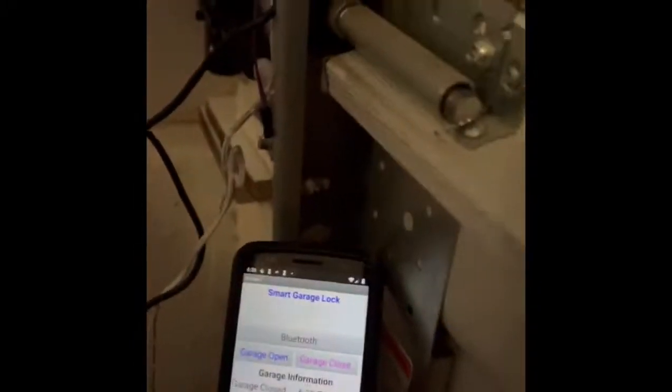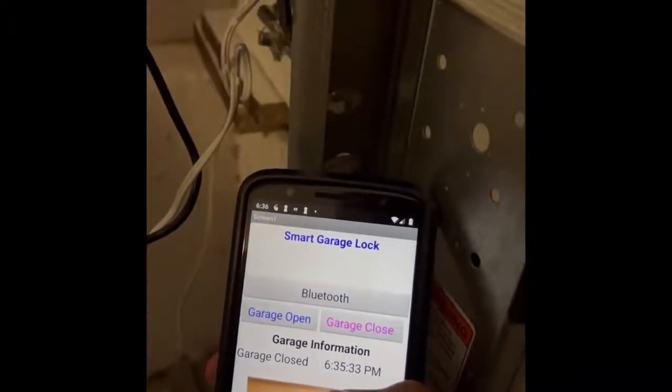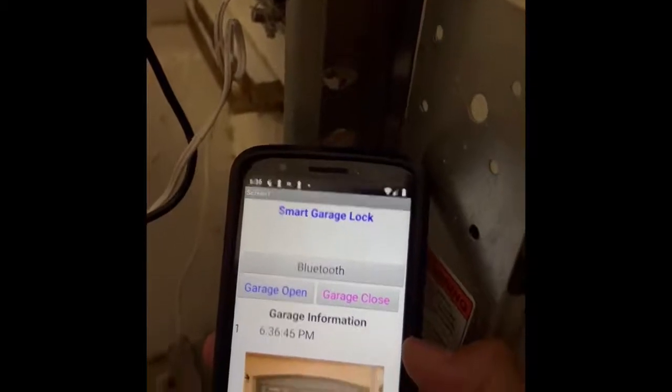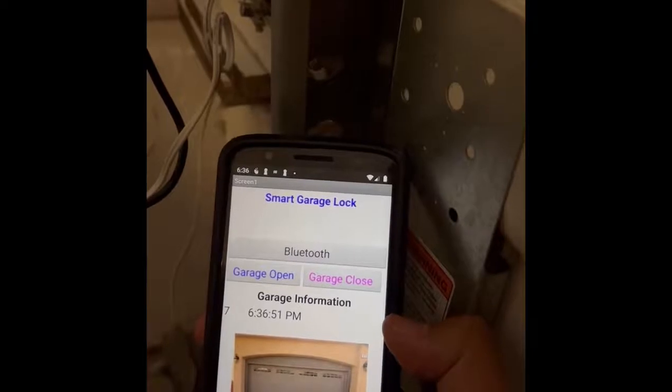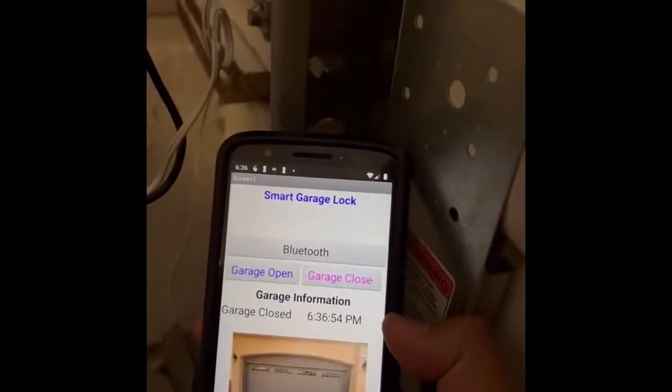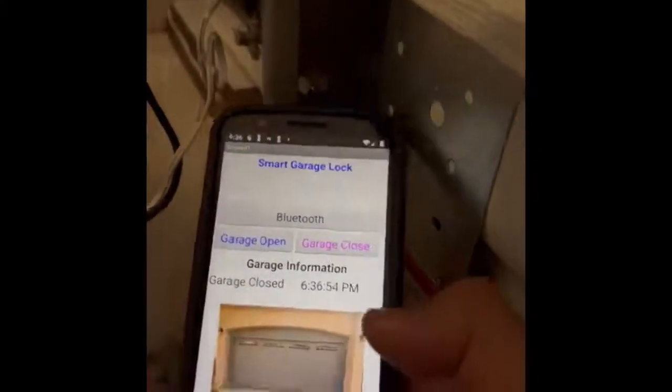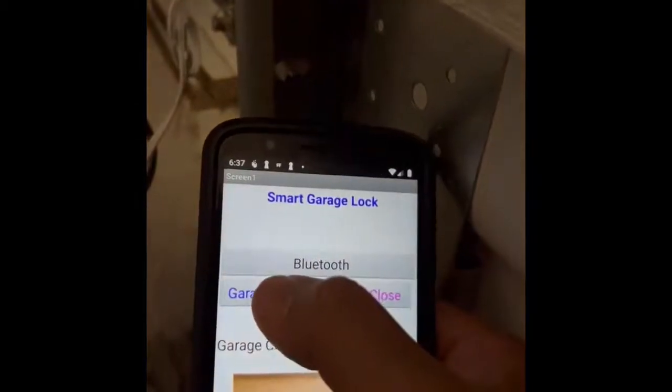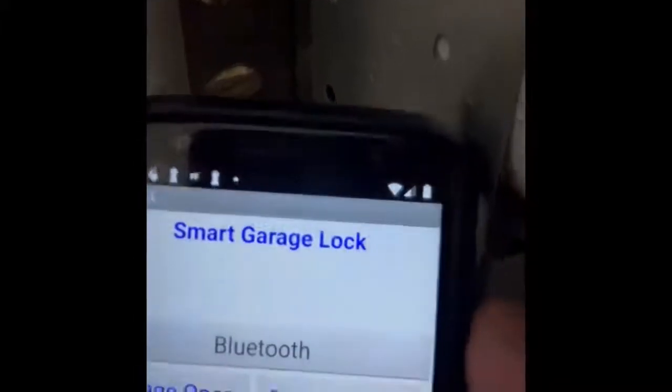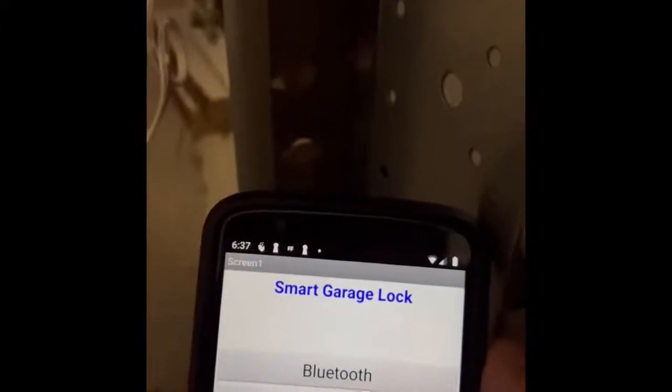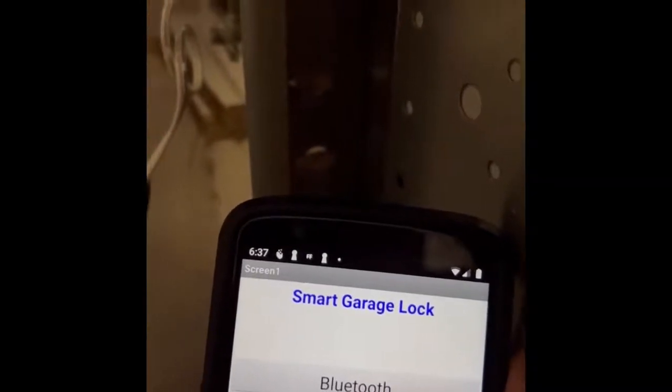Okay we are testing the garage lock. Garage door closed. Now if we wanted to do it manually with the app we just go garage door open. It opens and then we will see it close right now. There it is.